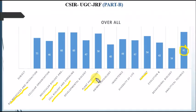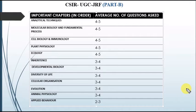Here are the important chapters for qualifying Part B of CSIR JRF: analytical techniques, ecology, plant physiology, cell biology, molecular biology, and biomolecules. The most important chapter is analytical techniques, from which 4 to 5 questions are asked.